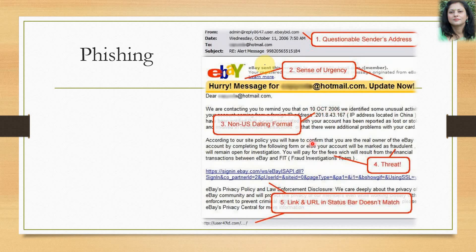There may also be terms used in the body of the mail like 'fraudulent' or 'fraud.' If you come across these, it is definitely a threat to your computer system. Nowadays, Gmail uses artificial intelligence to automatically detect these words and block such mail. Fifth, look at the link — if it does not match the URL in the status bar, think twice. These are five highlights: if you come across them, it may be a phishing attack and you should not open that email.